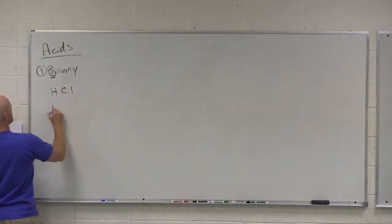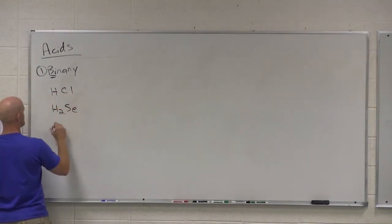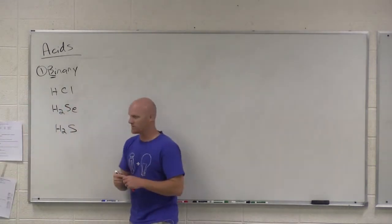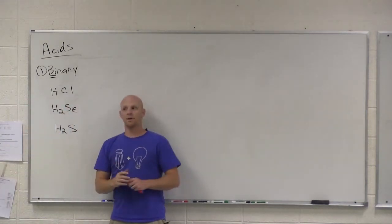Examples include HCl, H2Se, and H2S. These are all examples of binary acids. H2O could be a binary acid as well.